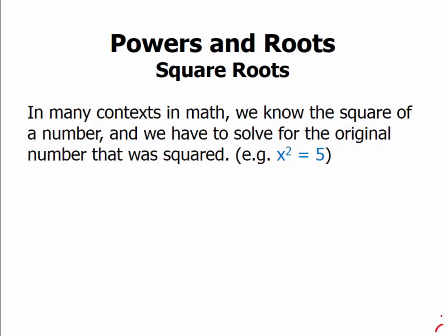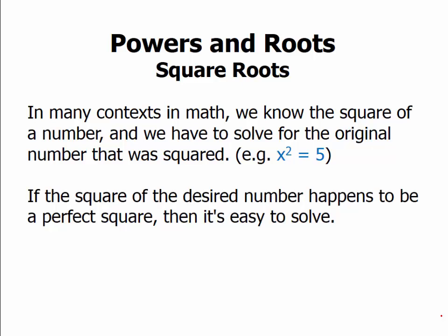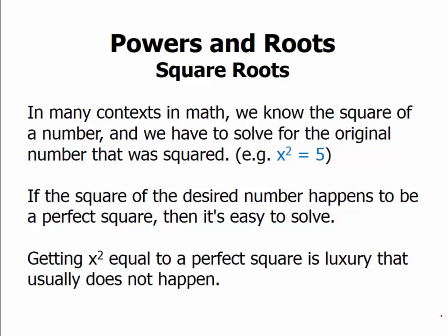For example, we might wind up with a situation such as x squared equals 5. Now if the square of the desired number happens to be a perfect square, then that's easy to solve. Getting x squared equal to a perfect square is a luxury, and that doesn't usually happen.